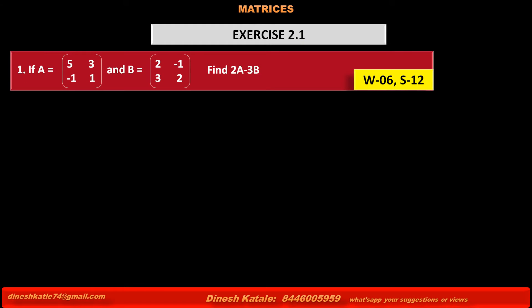Problem one: if matrix A is equal to [5, 3; -1, 1] and matrix B is equal to [2, -1; 3, 2], find 2A minus 3B.